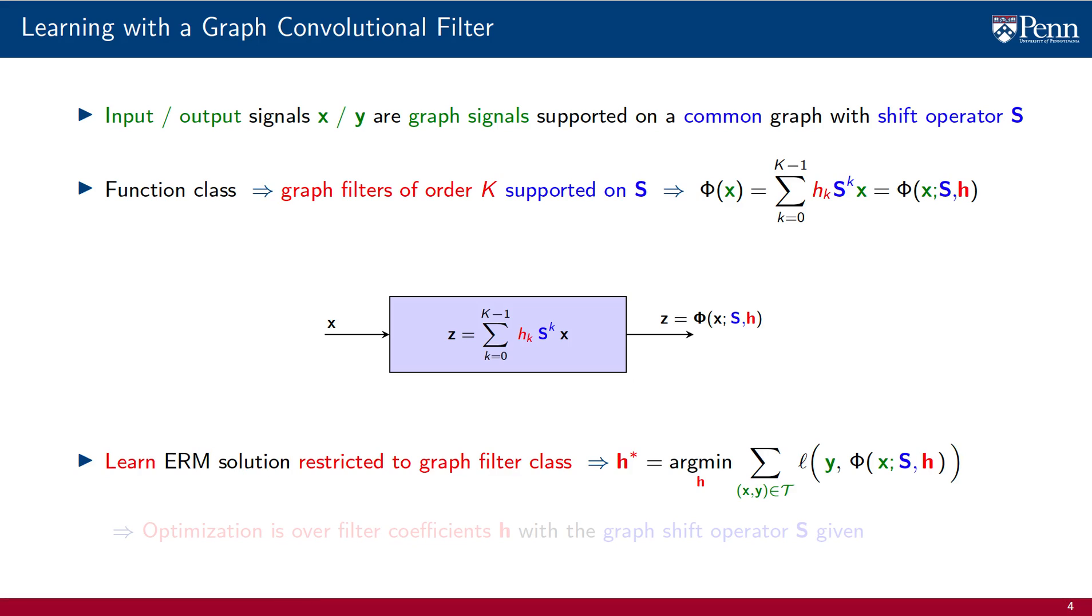With this choice of parameterization, learning reduces to finding the optimal set of filter coefficients h star that minimize the loss averaged over the training set. We emphasize that even though the function class is parameterized by both the shift operator S and the filter coefficients h, the optimization is only over the set of coefficients h with the shift operator given. The filter h is learnable, the shift operator is prior information we leverage.